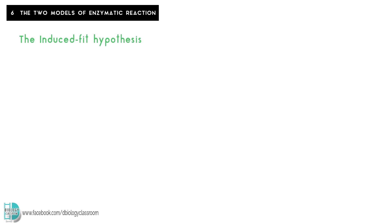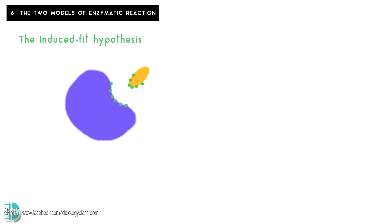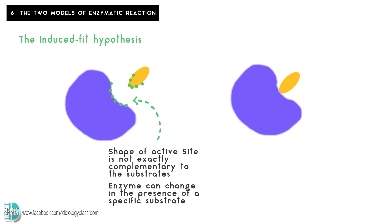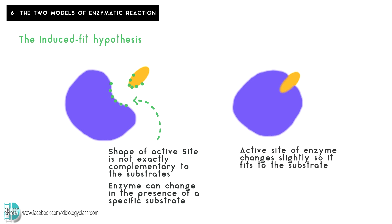The second model is the induced fit hypothesis. It says that the shape of active sites are not exactly complementary to the substrate. They change in the presence of a specific substrate to become complementary. When effective collision occurs, the active site of the enzyme changes slightly so it fits to the substrate, and then the reaction occurs.